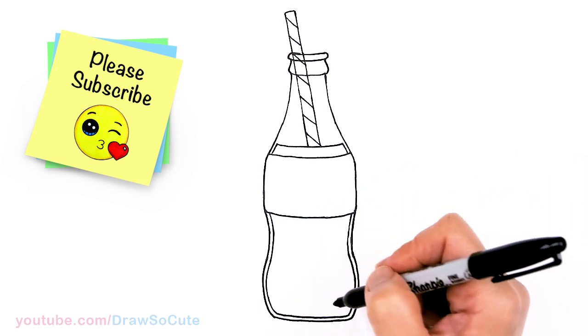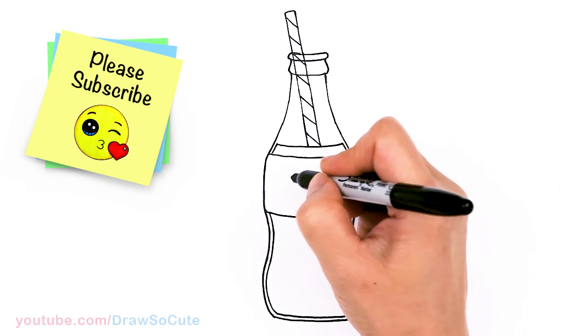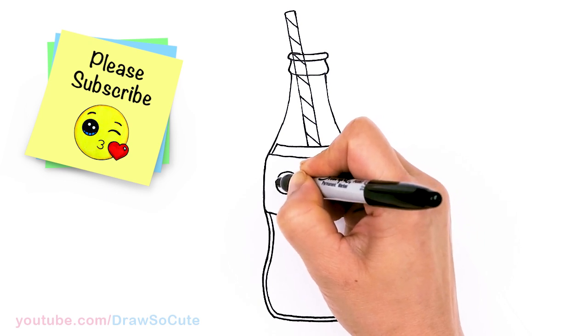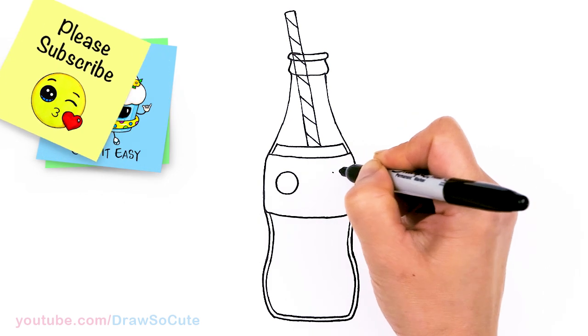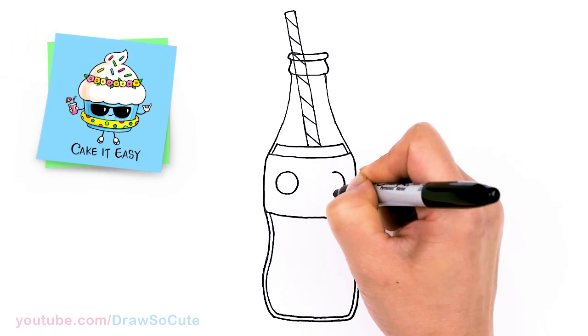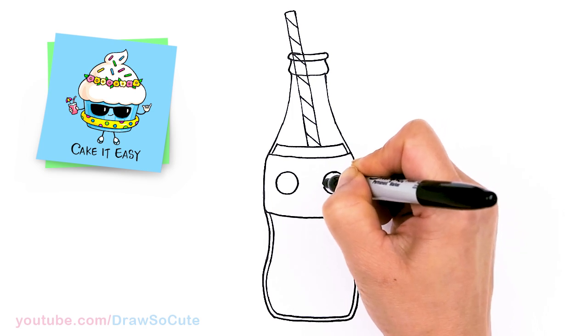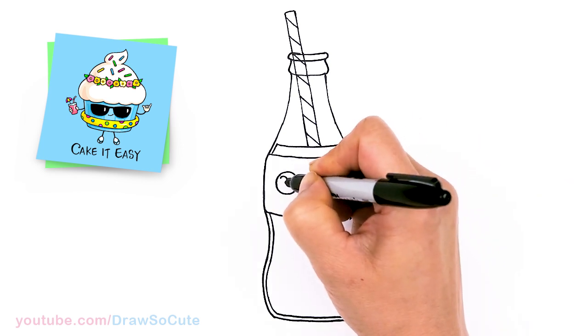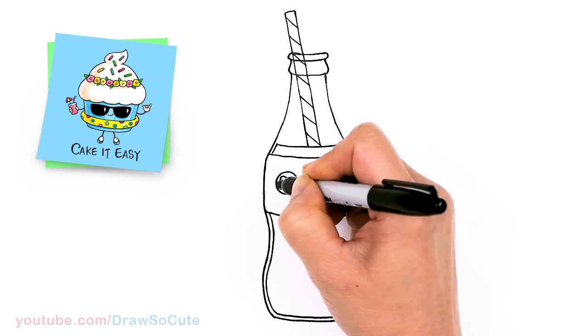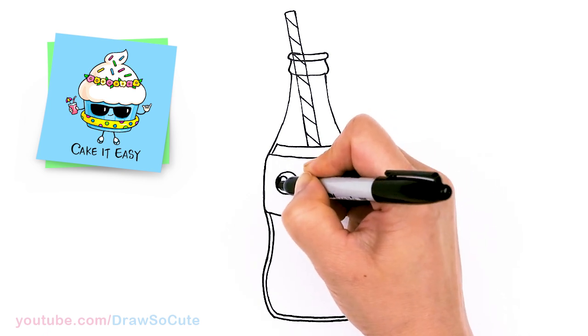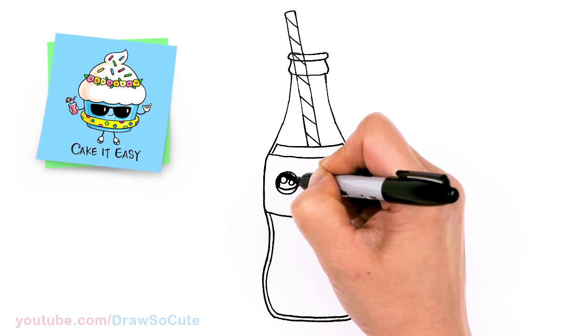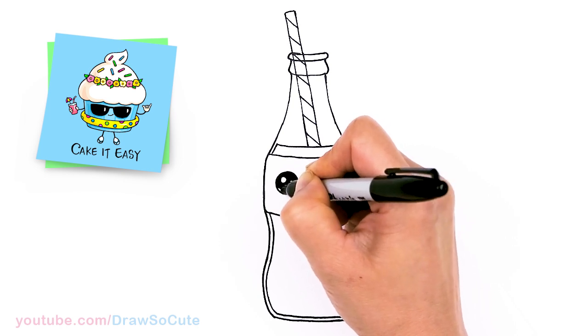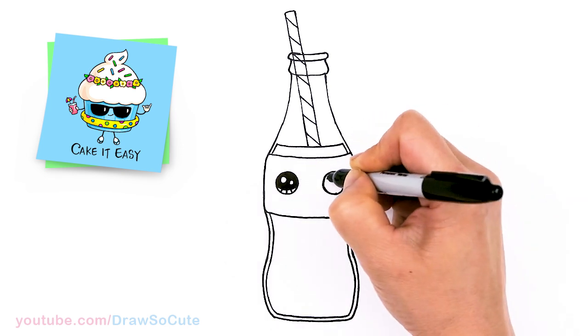And then let's see here. Let's bring this bottle of Coke to life of course, right? So in this area where the label is, I'm going to start right here and draw a big circle for a draw so cute eye. And come right across and do the same thing. And let's make them draw so cute eyes. So let's come in here with two small circles for highlights. And a curved line at the bottom. And shade in the top. And lines at the bottom. And same thing over here.